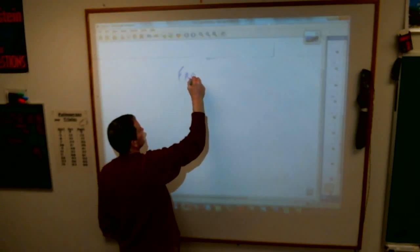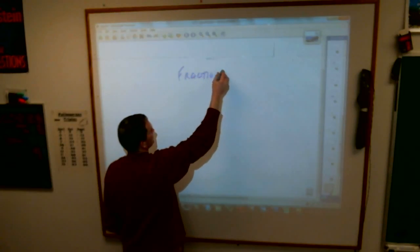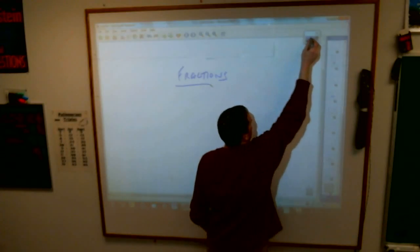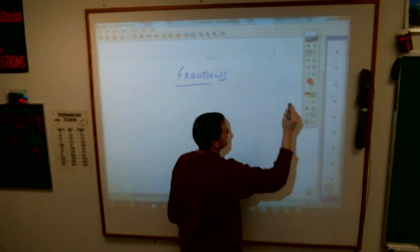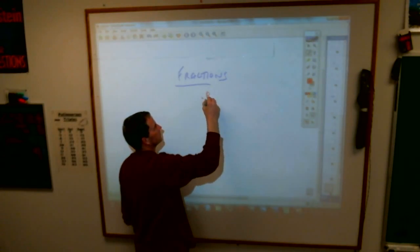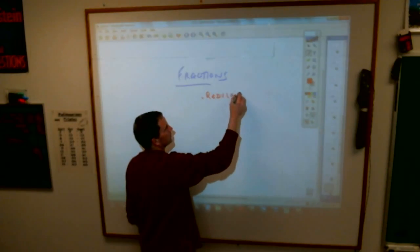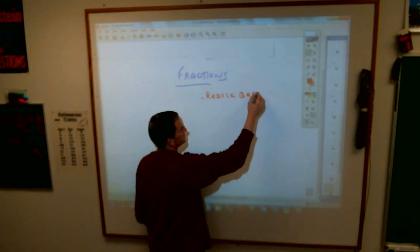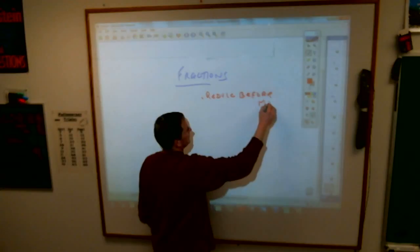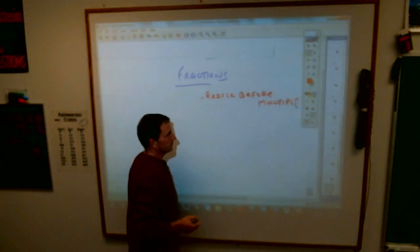Fractions. The book called it Reducing Before You Multiply. I'm pretty sure we have this one, and here is just the example here.